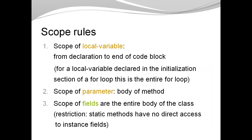Now let's look at some scope rules. The scope of local variables is from the point where they are declared all the way to the end of the code block, that's the closing curly brace. If you declare a local variable as a control variable in the header of a for loop, then the scope is the whole for loop, both the body but also the expressions in the header of the for loop.